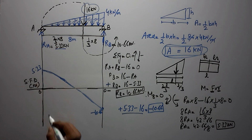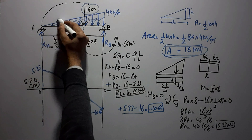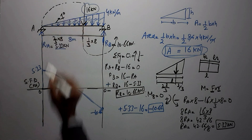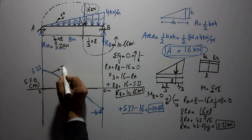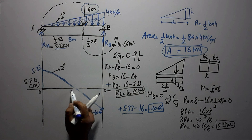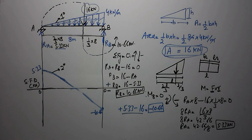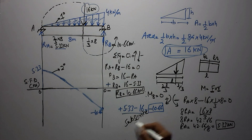It is important to note that because the applied load is a first-degree (linear) triangular load, the shear force diagram is a second-degree or parabolic curve. This completes the analysis of the beam with a uniformly varying triangular load — finding support reactions and drawing the shear force diagram. Hope you understood; please subscribe to the channel for daily civil engineering videos.